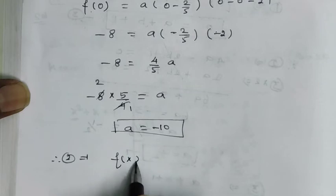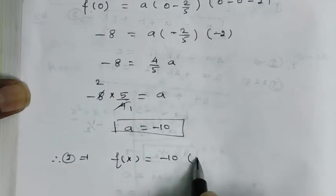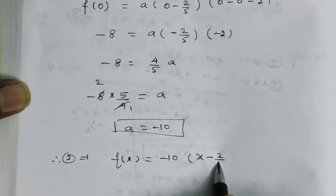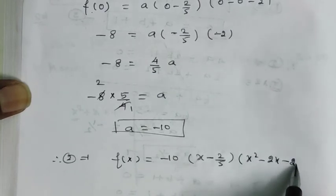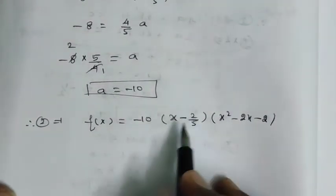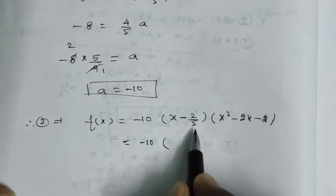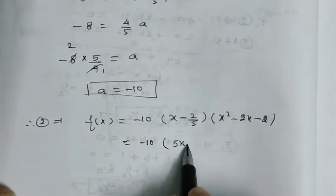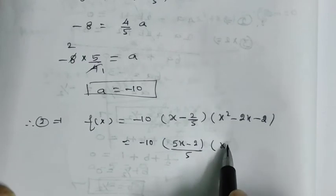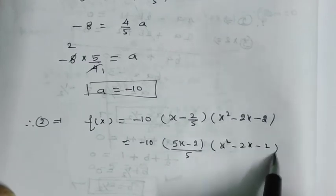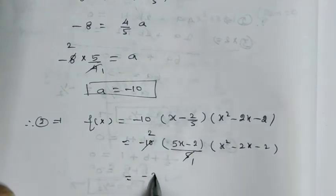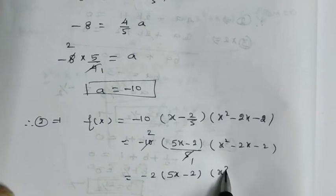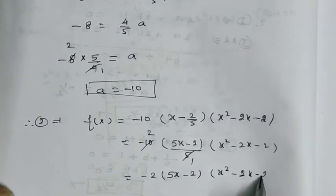Therefore f(x) equals minus 10 into (x minus 2/5)(x squared minus 2x minus 2). Writing x minus 2/5 as (5x minus 2)/5, we get minus 10 divided by 5, which is minus 2, times (5x minus 2)(x squared minus 2x minus 2).